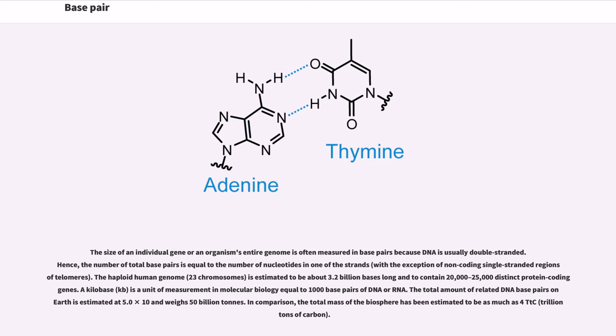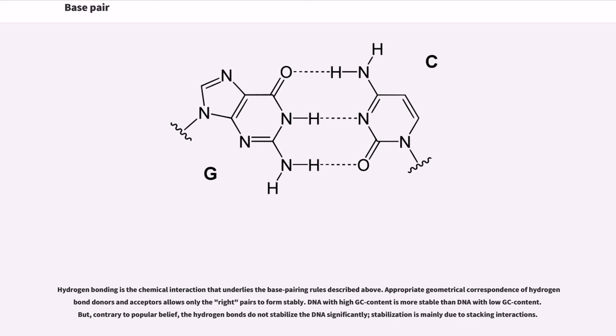Hydrogen bonding is the chemical interaction that underlies the base pairing rules described above. Appropriate geometrical correspondence of hydrogen bond donors and acceptors allows only the right pairs to form stably. DNA with high GC content is more stable than DNA with low GC content. But, contrary to popular belief, the hydrogen bonds do not stabilize the DNA significantly. Stabilization is mainly due to stacking interactions.